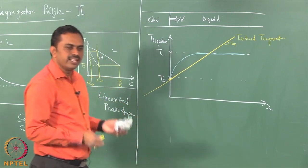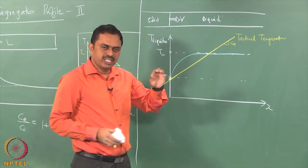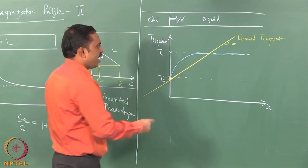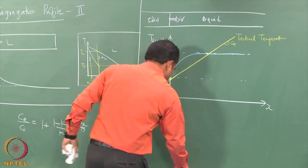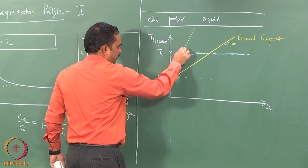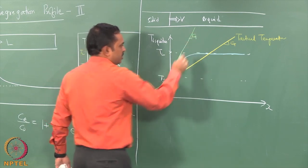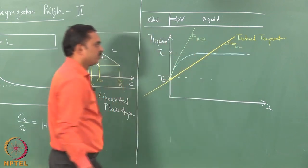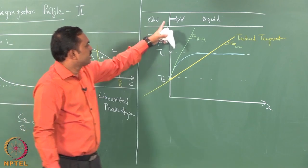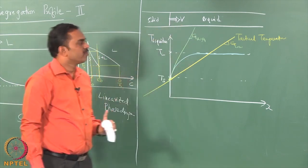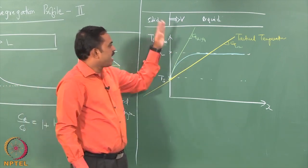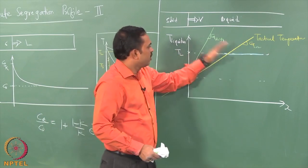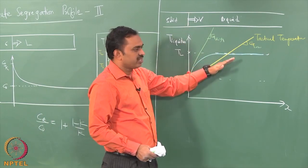If you have a very intense heat source, the temperature variation is very steep and you may have a high G value. You may also have a situation with low G. We can inspect the effect on solidification mode by looking at these two profiles. High gradient corresponds to situations like laser welding or electron beam welding. Low gradient corresponds to situations like gas tungsten arc welding or manual arc welding. By changing the heat source intensity, temperature gradients change from shallow to steep.